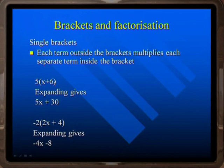5 brackets x plus 6 close brackets. So we do 5 times x to give 5x and 5 times 6 to get 30.